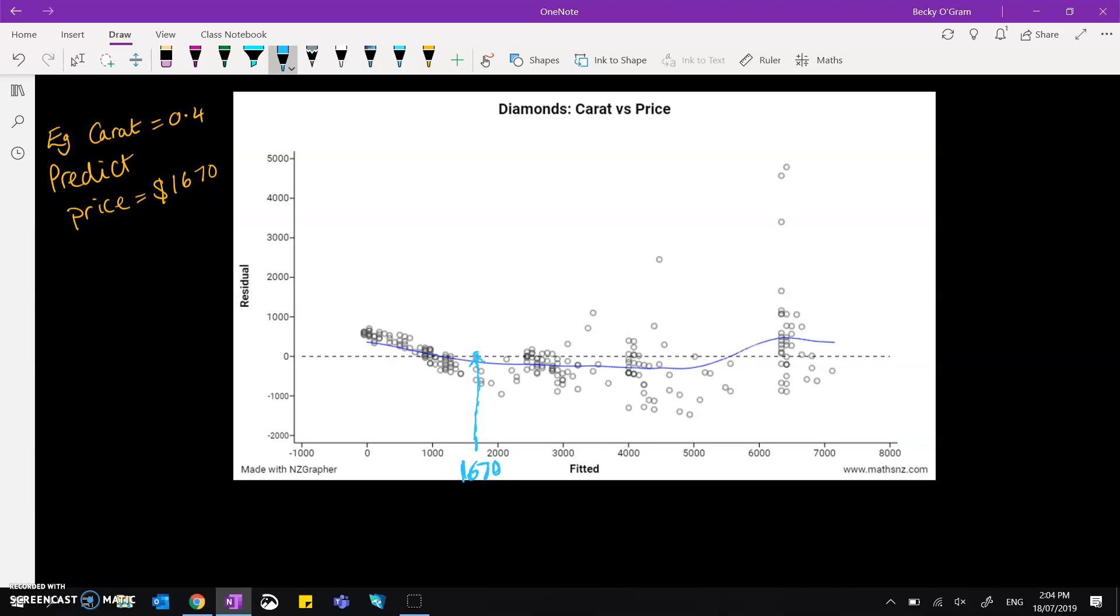We would get predicted, that's our predicted value there of 1670. If our data was exactly on the residuals line that we expect it to be, but what's actually happening at that point there is that most of the data is sitting below that line. In fact, all of the data is below the line at the 1670.